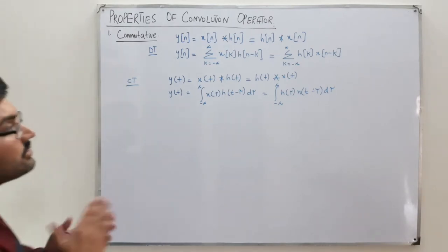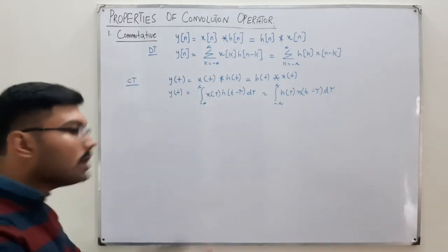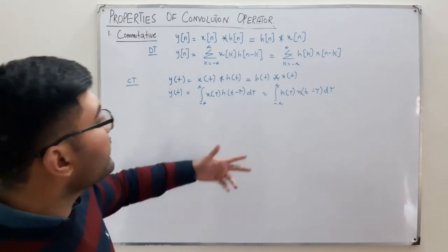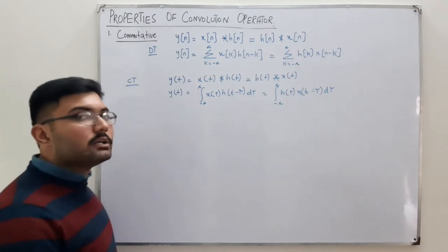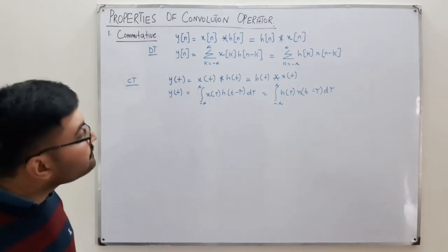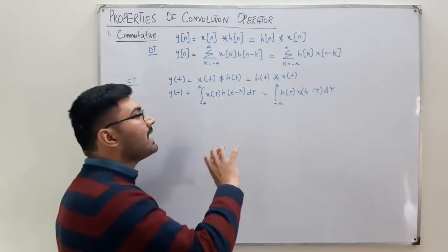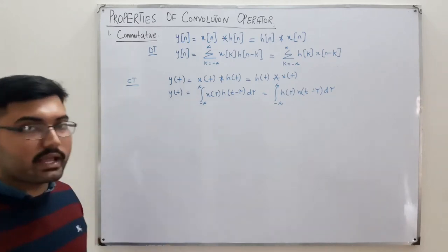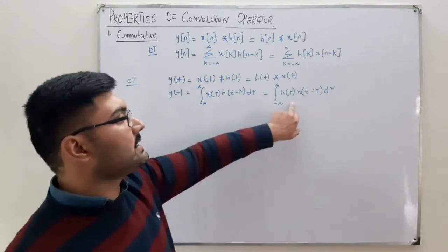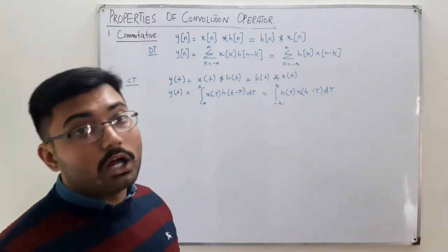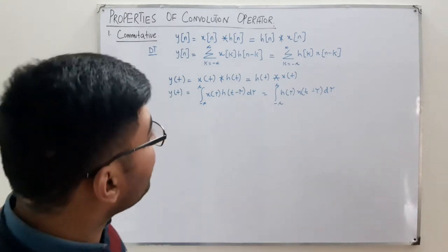What this means practically is that whatever is easier for you, you do that. In previous examples, we took x(t) and shifted h(t). But if you find shifting h(t) difficult, you can instead shift x(τ) and keep h(τ) in place. This is what the commutative law states.